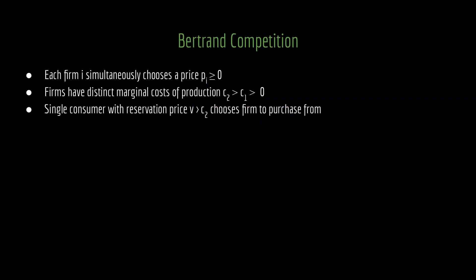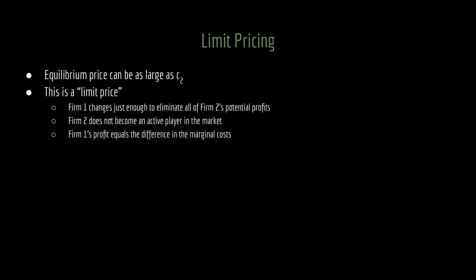Of course, in this model, they're actually competing with one another on price. What we can see in this model with asymmetric marginal cost of production is an equilibrium price as large as C2 — as large as firm 2's marginal cost. This is known as limit pricing. Firm 1 in this equilibrium is charging just enough to eliminate all of firm 2's potential profits. As a consequence, firm 2 is not going to become an active player in the market, and all of the profits are going to go to firm 1.